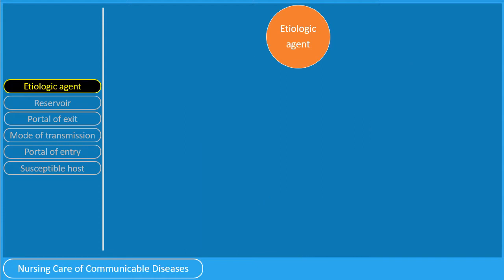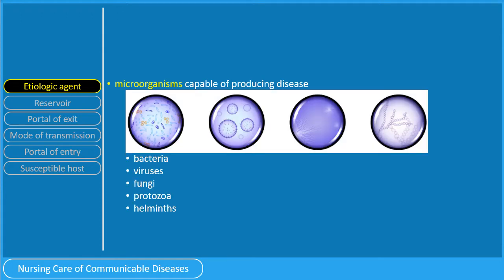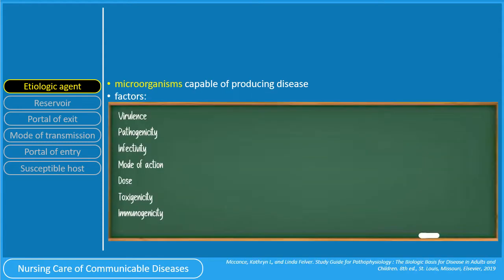Let us discuss the links one by one. First up is the etiologic agent. The etiologic agent in the chain of infection are the microorganisms capable of producing disease — the pathogens. Microorganisms include bacteria, viruses, fungi, protozoa, and helminths. There are several factors that influence these pathogens: virulence, pathogenicity, infectivity, mode of action, dose, toxigenicity, and immunogenicity.